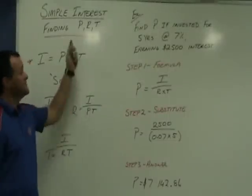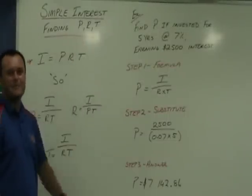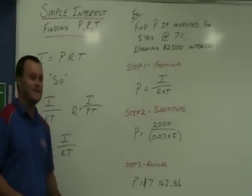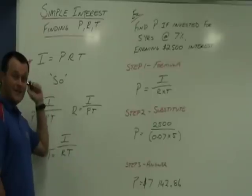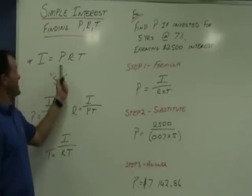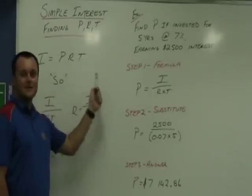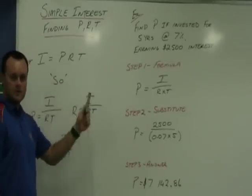Hi guys, and welcome to this simple interest lesson on how to find P, R, and T. Well, let's have a quick refresh. Simple interest - finding simple interest is I equals P times R times T. Principle times rate times time.